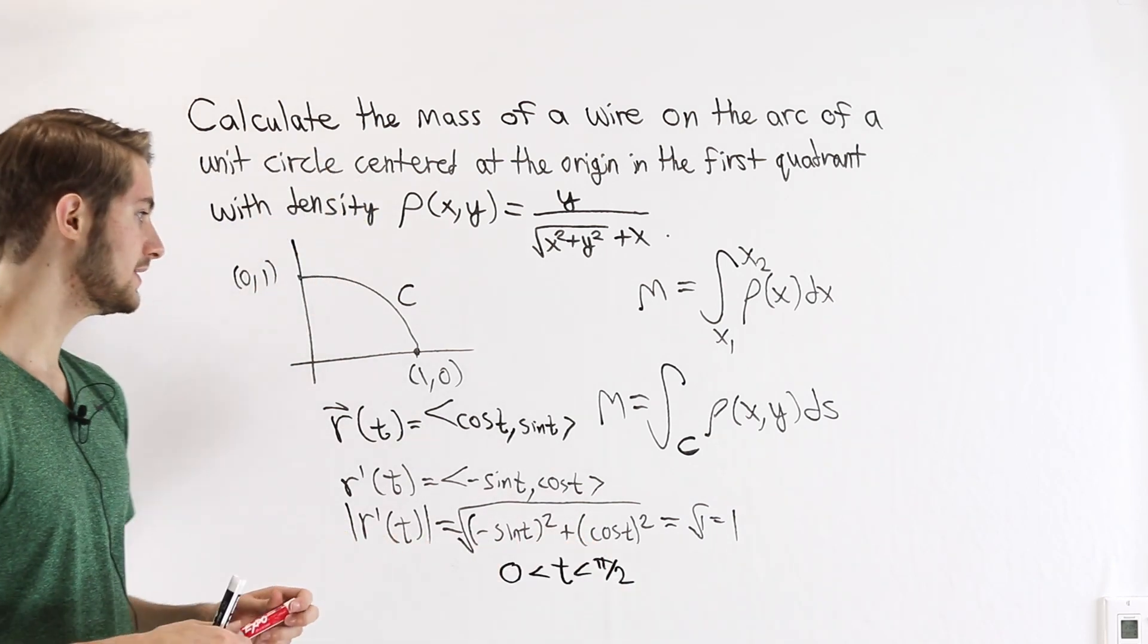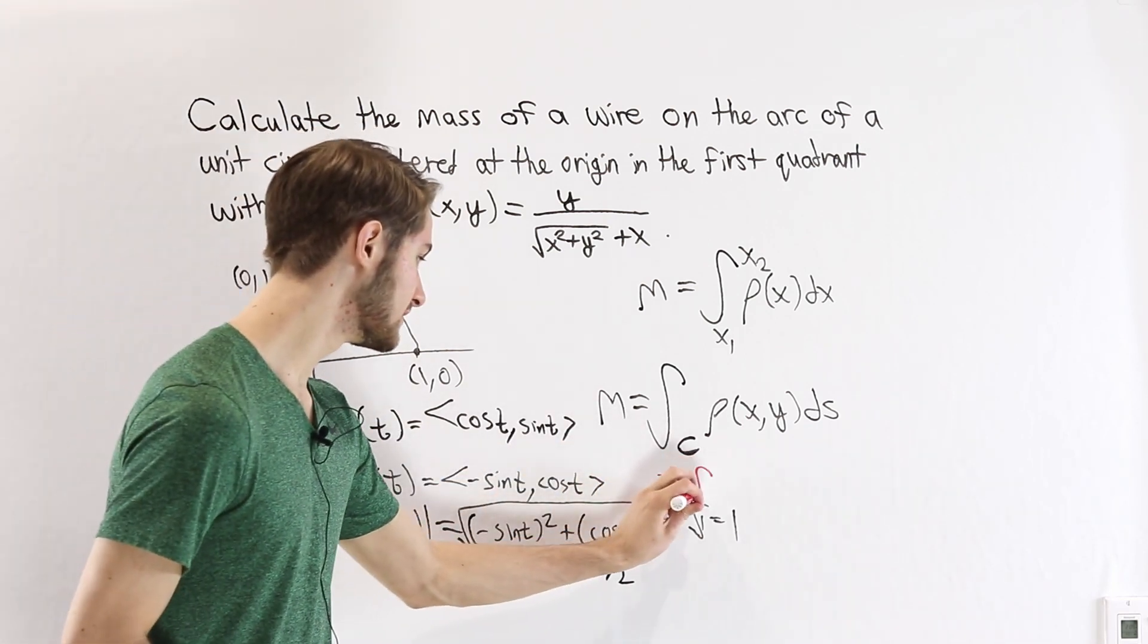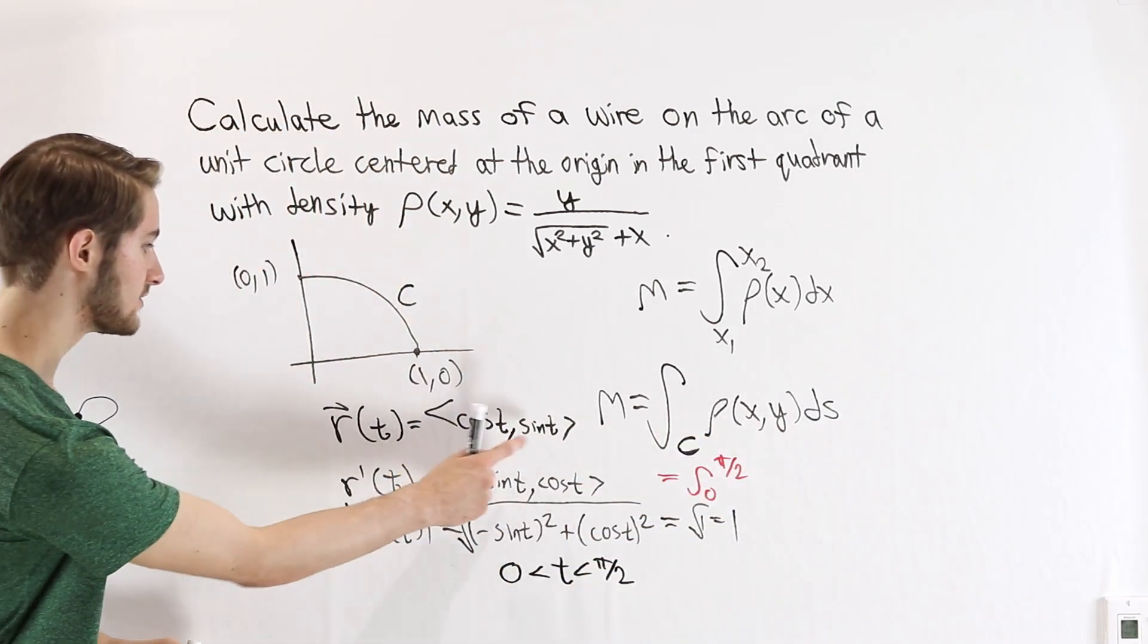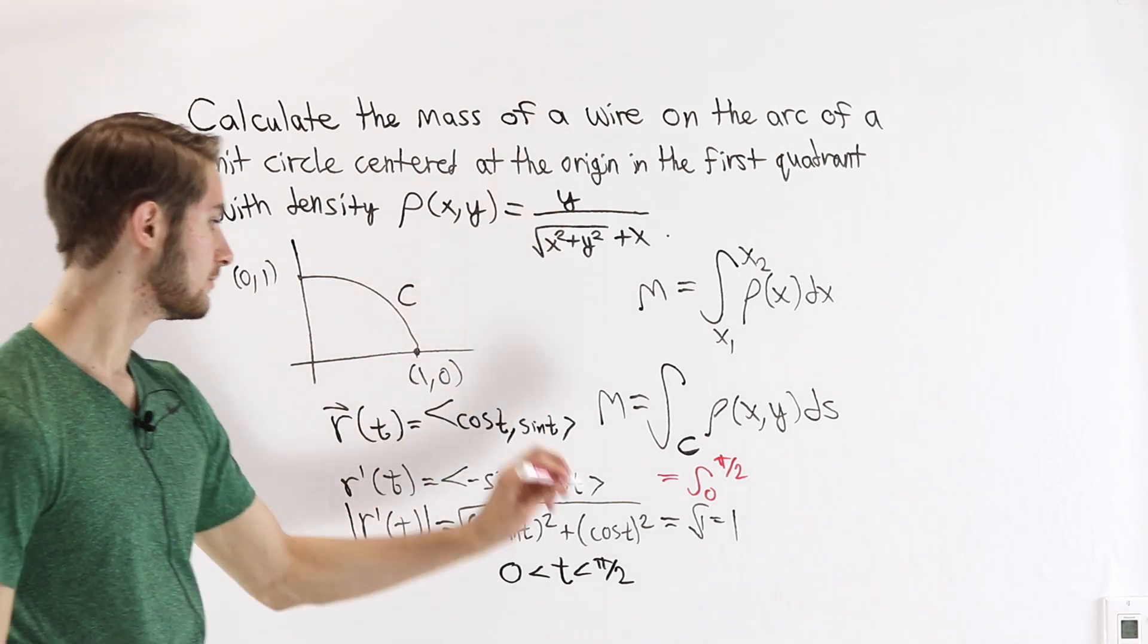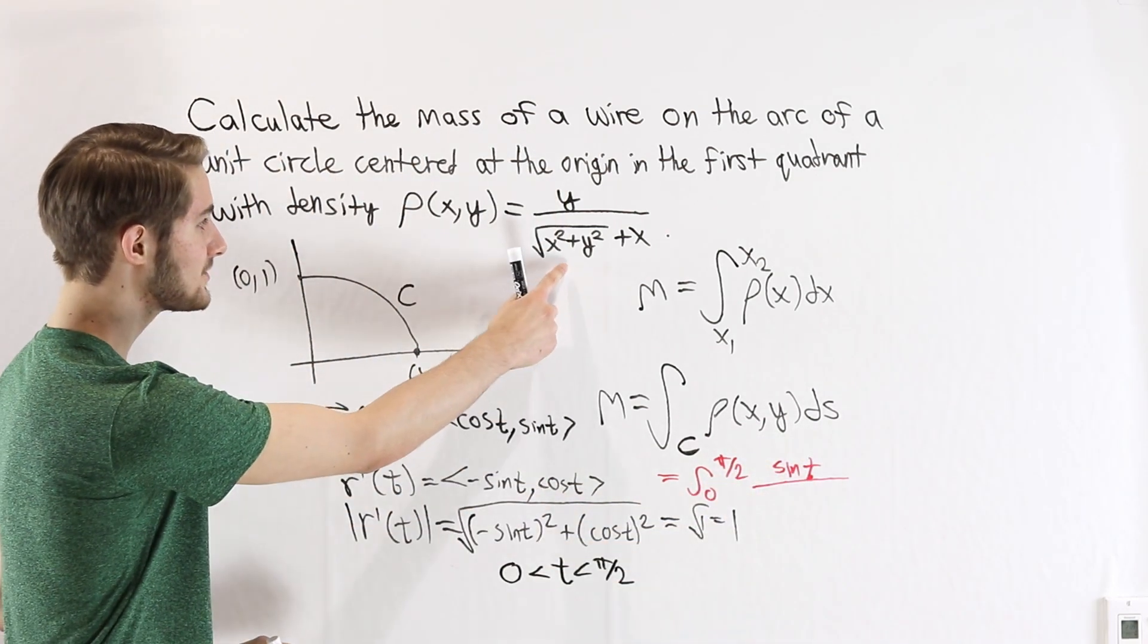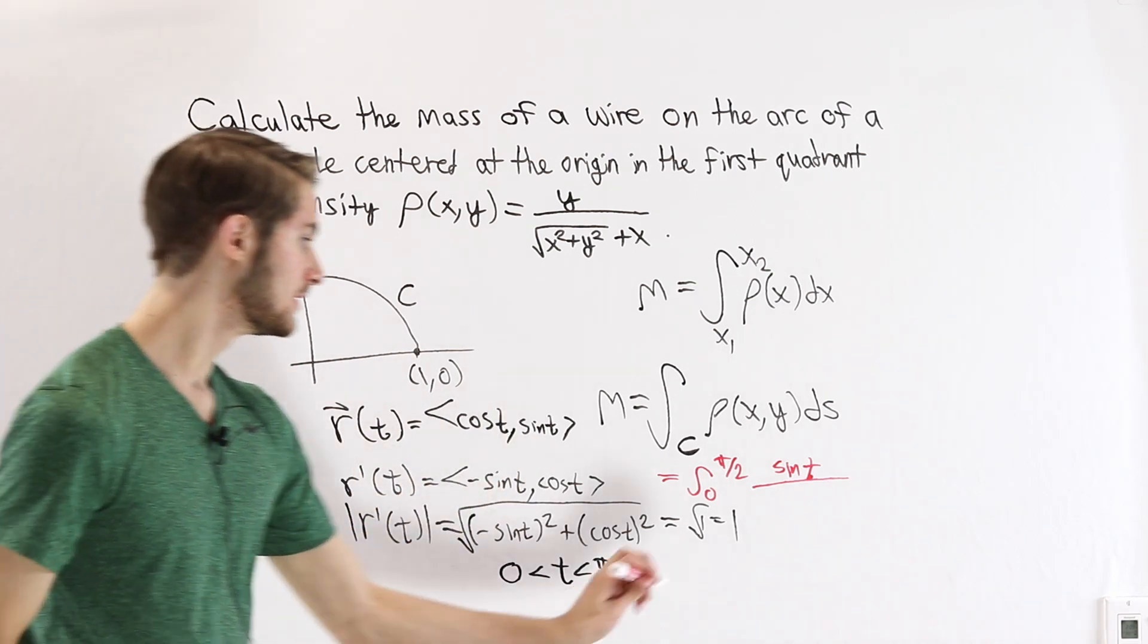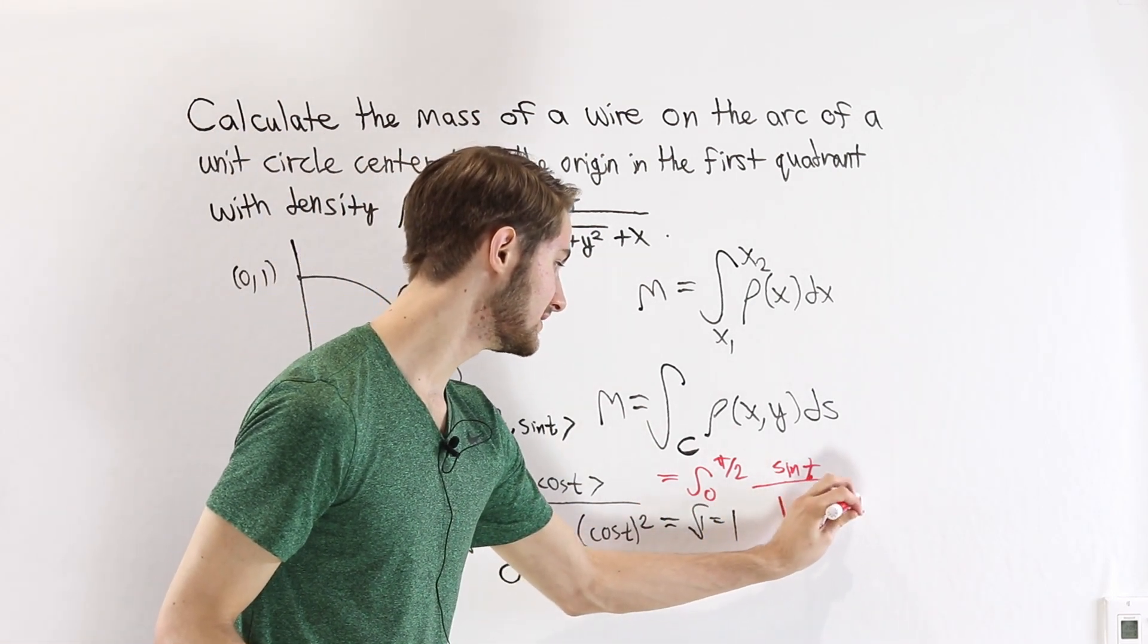Now, we have all the information that we need to actually plug in this line integral. We're going to have the integral for t going from 0 to π/2, first of this density function. We have the x and y values. We just need to plug them in to the function we have here. Y in the numerator is going to be sine t. On the bottom here, x² + y² is cos² t + sin² t, which is 1. So we're just going to have a 1 right here. And then plus x is cosine t.